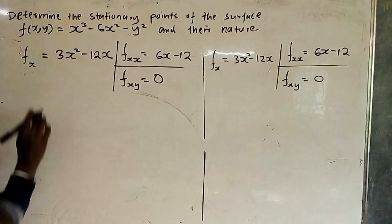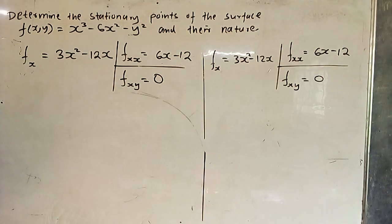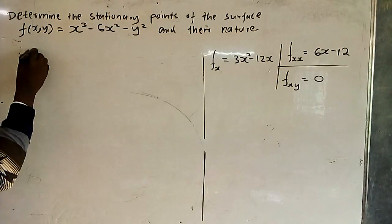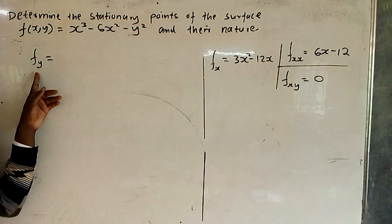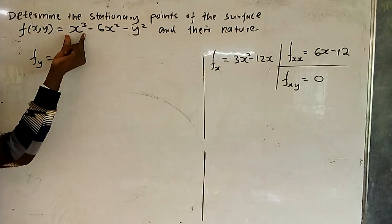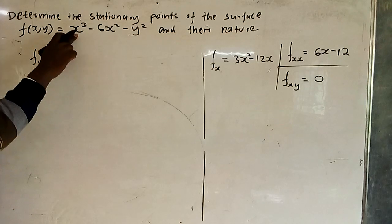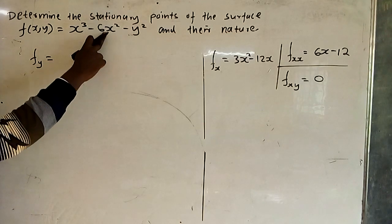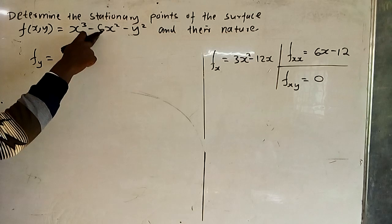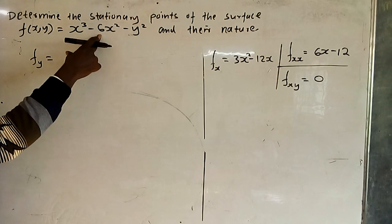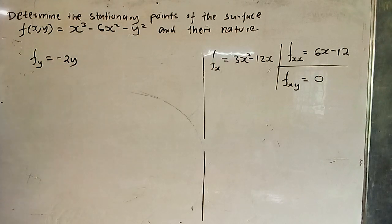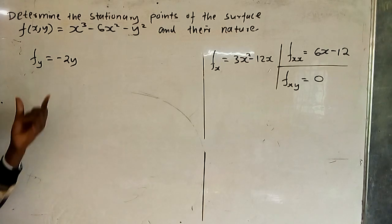We now differentiate the original function partially with respect to y. Only y is a variable — everything else is a constant. So x³ partially with respect to y gives zero. Minus 6x² partially with respect to y gives zero. And -y² partially with respect to y gives -2y. So f_y = -2y.